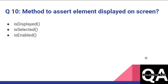The tenth question is: what are the different methods to assert an element displayed on the screen? Selenium provides three methods: isDisplayed(), isSelected(), and isEnabled(). These are the methods you can use to assert that an element is displayed on the screen. That's all from this second video — I hope you liked it. Please subscribe to the channel, thank you.